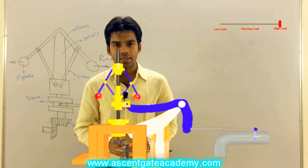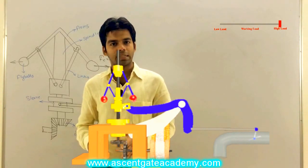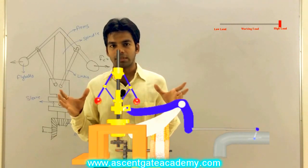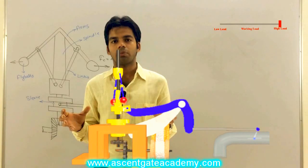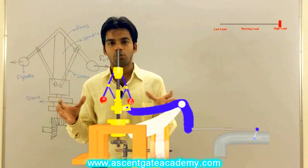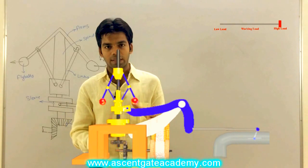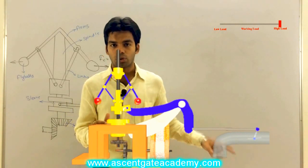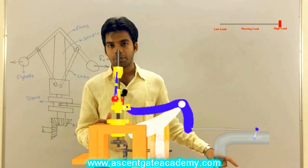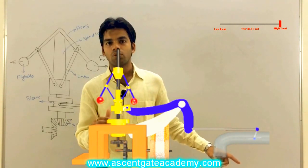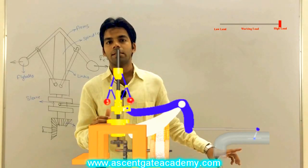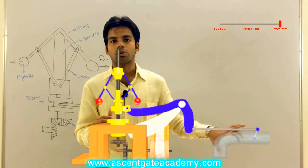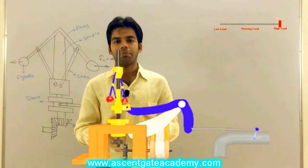Now let us understand this with the help of 3D animation. As the load increases, the speed of the bevel gear will decrease, the speed of the spindle will decrease. This will decrease the centrifugal force acting on the fly ball and the fly ball will tend to move inwards, which will further lower the sleeve. This sleeve is connected to the throttle valve with the help of the bell crank lever. So when the sleeve is getting lowered, the throttle valve will be opened. If the throttle valve is getting opened, more amount of fuel is coming and the speed can be maintained.